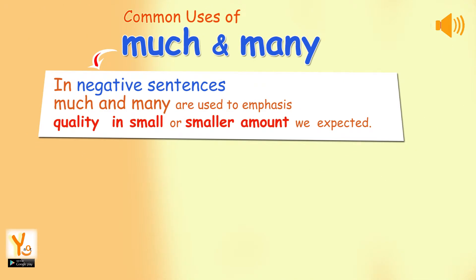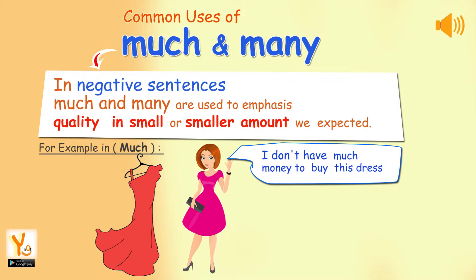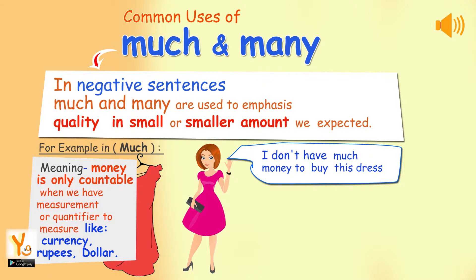Common uses of much and many. In negative sentences, much and many are used to emphasize quantity as small, or smaller than the amount we expected. For example, with much: I don't have much money to buy this dress. Money is only countable when we have a measurement or quantifier to measure it, like currency, rupees, or dollar.